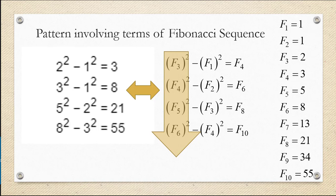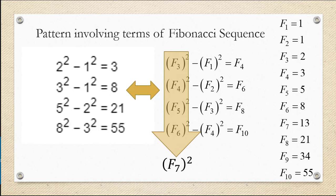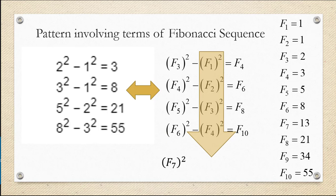And looking at the second term in each equation, we start with F sub 1 squared, then F sub 2 squared, F sub 3 squared, F sub 4 squared. So it makes sense that probably in the next equation, we would subtract F sub 5 squared.